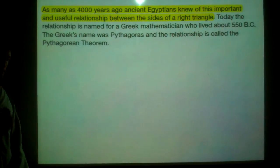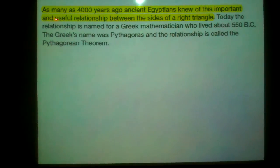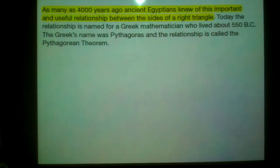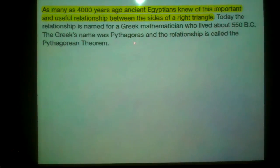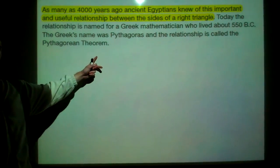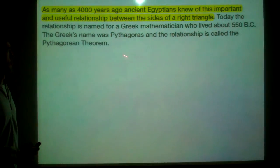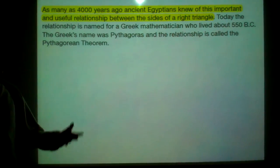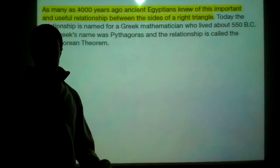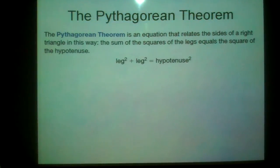This concept has been around for many years — as many as 4,000 years ago. The ancient Egyptians knew of this important relationship. The relationship is named for a Greek mathematician who lived around 550 BC: Pythagoras. So it's called the Pythagorean theorem. He didn't originate it — there is evidence the Egyptians knew it 4,000 years ago — but he is credited with formalizing it.